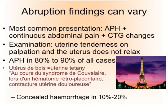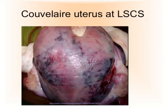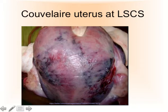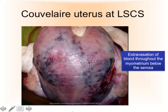Concealed hemorrhage is the case in 10 to 20% of cases — meaning no external bleeding, no noticeable bleeding per vagina. The Couvelaire uterus, as the French term describes, is shown here in a picture taken at a caesarean section where the uterus has been exteriorized. You can see the uterine myometrium is engorged by blood — extravasation of blood via the placental bed throughout the myometrium, below the serosa, the surface of the uterus. This is the typical Couvelaire uterus.